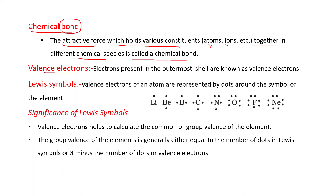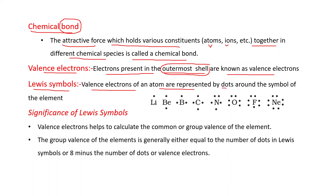Valency electrons: electrons present in the outermost shell are known as valency electrons, and this outermost shell is also known as the valency shell. Lewis symbols: valency electrons of an atom are represented by dots or crosses around the symbol of the element. That is known as Lewis symbols.